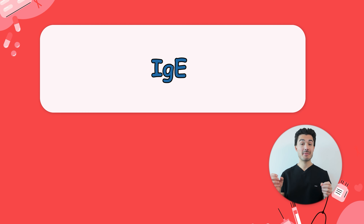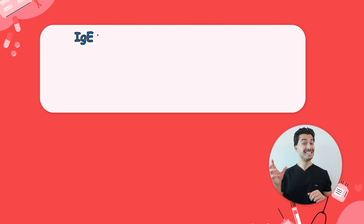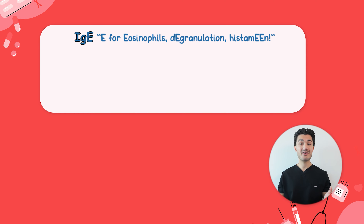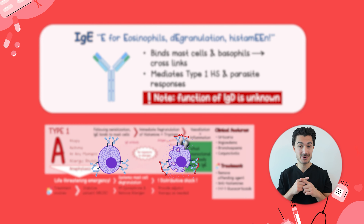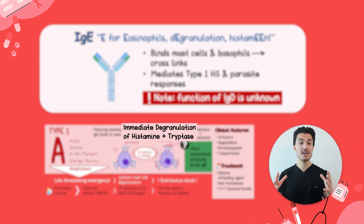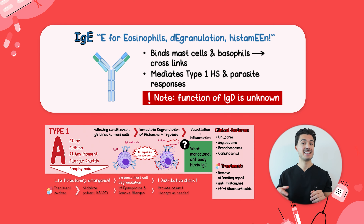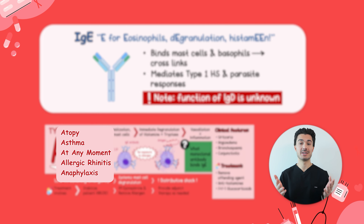Now let's shift gears to IgE. Remember the E for eosinophils, degranulation, and histamine. IgE is located on the surface of mast cells, and in type 1 hypersensitivity reactions, cross-linking of these receptors leads to massive degranulation and release of vasoactive and inflammatory mediators like histamine. Associate IgE with the AIDs: anaphylaxis, allergies, and atopy including eosinophilic conditions. IgE also fights off parasite and helminth infections, with eosinophils secreting major basic protein to help.